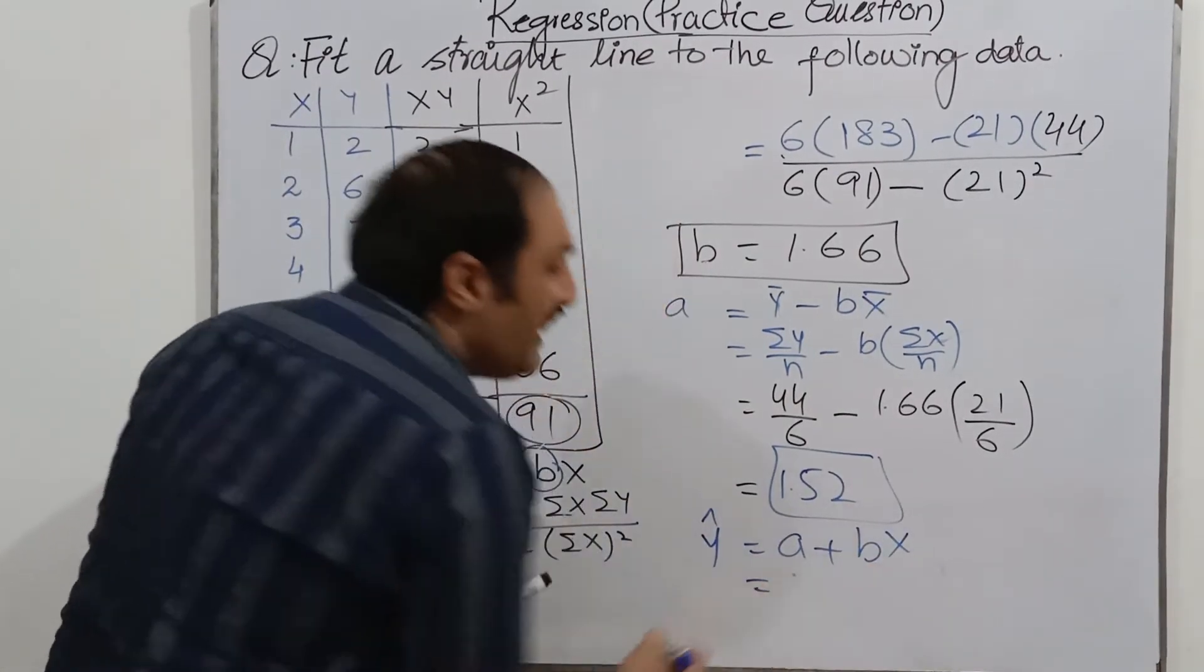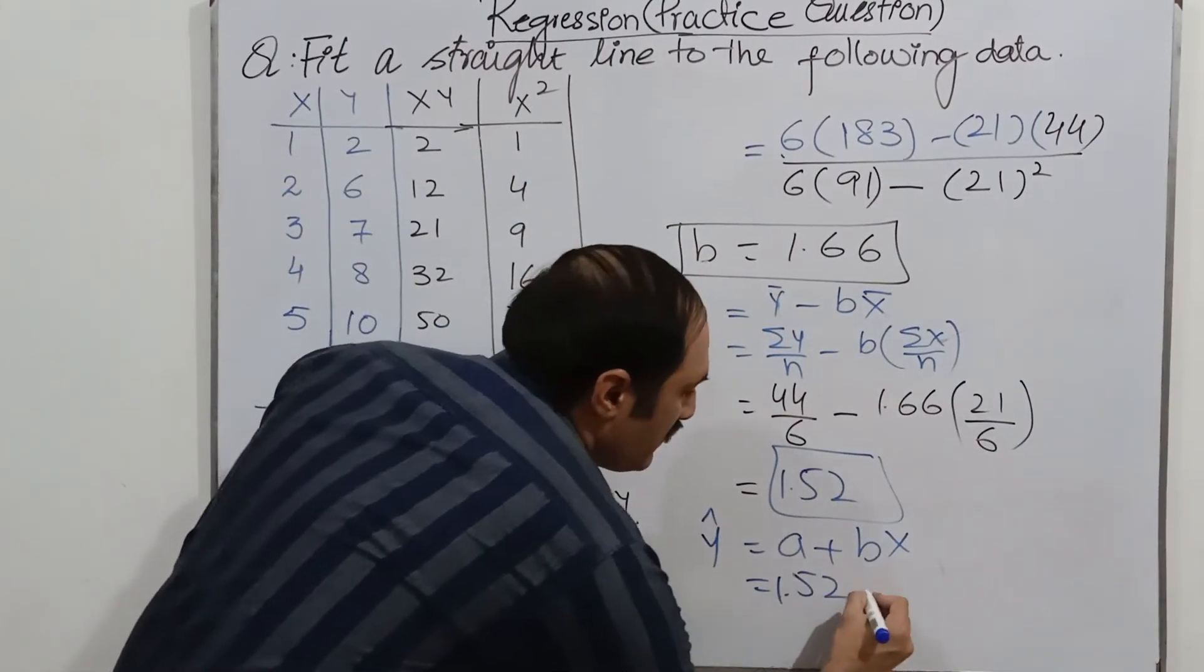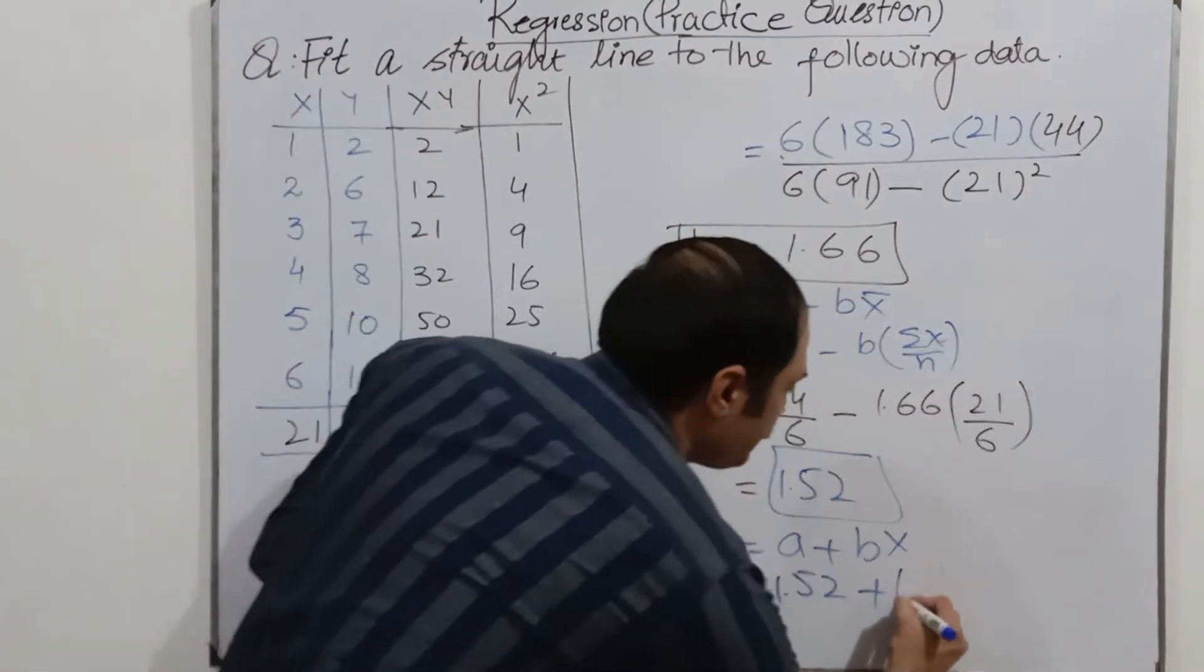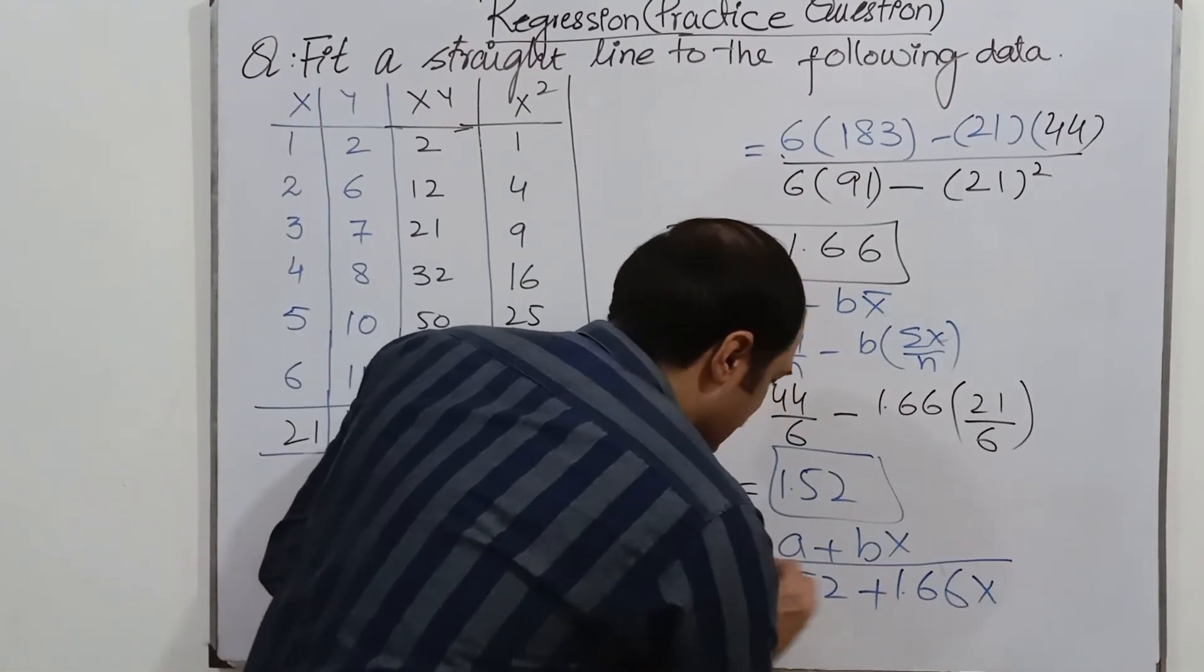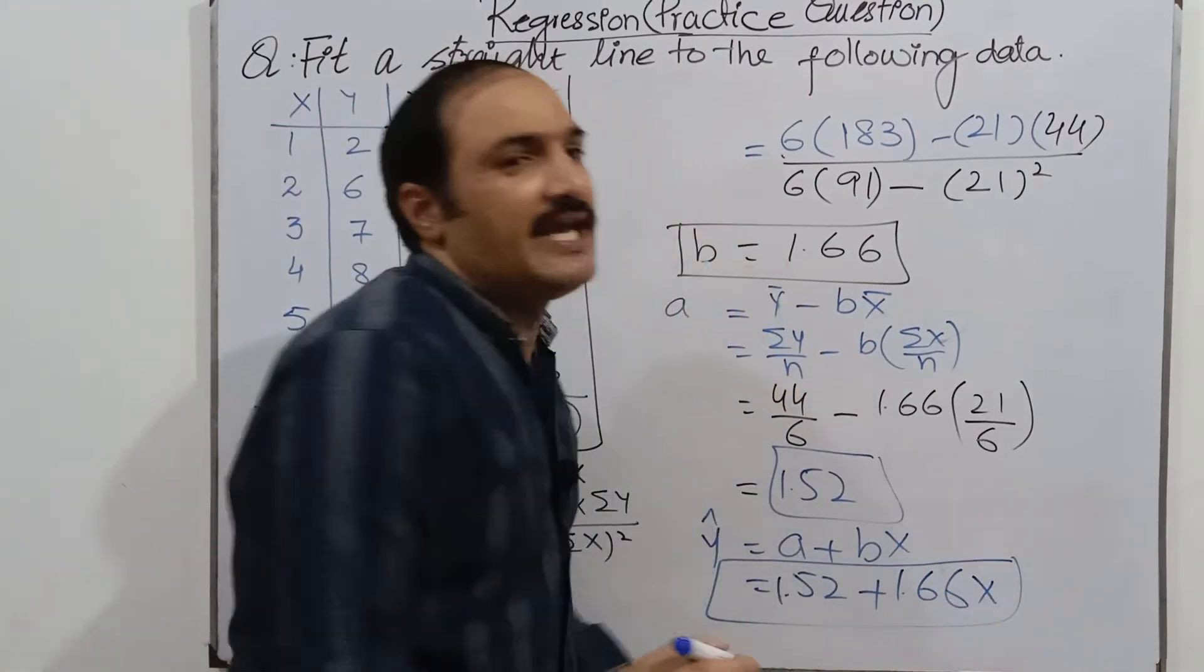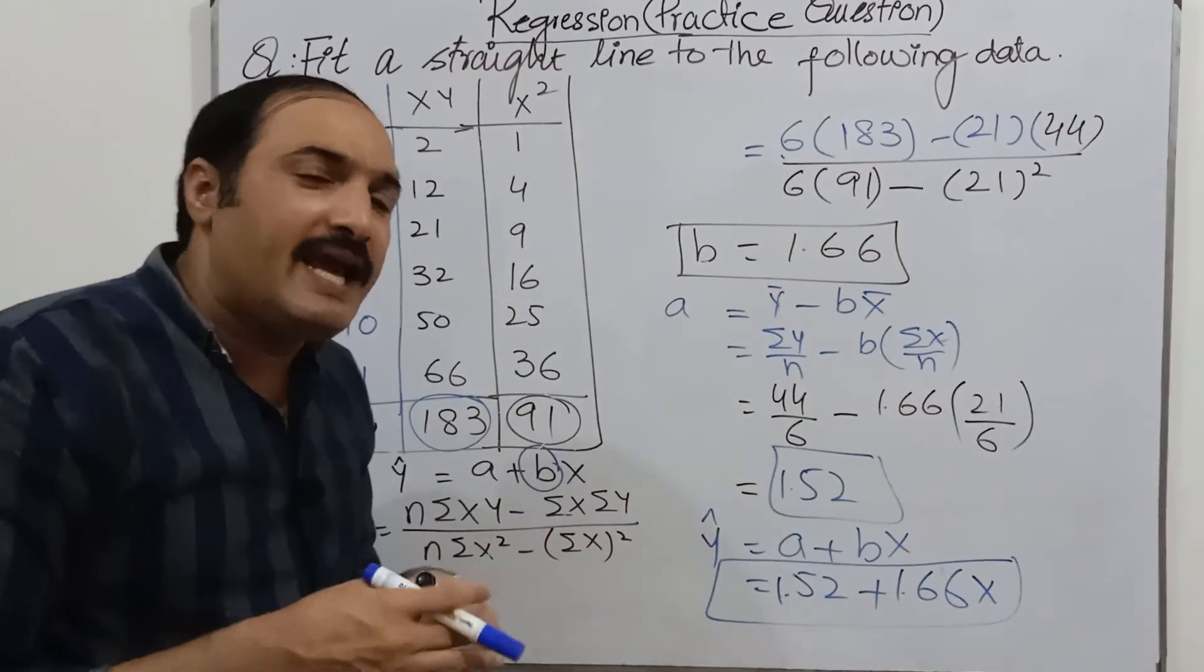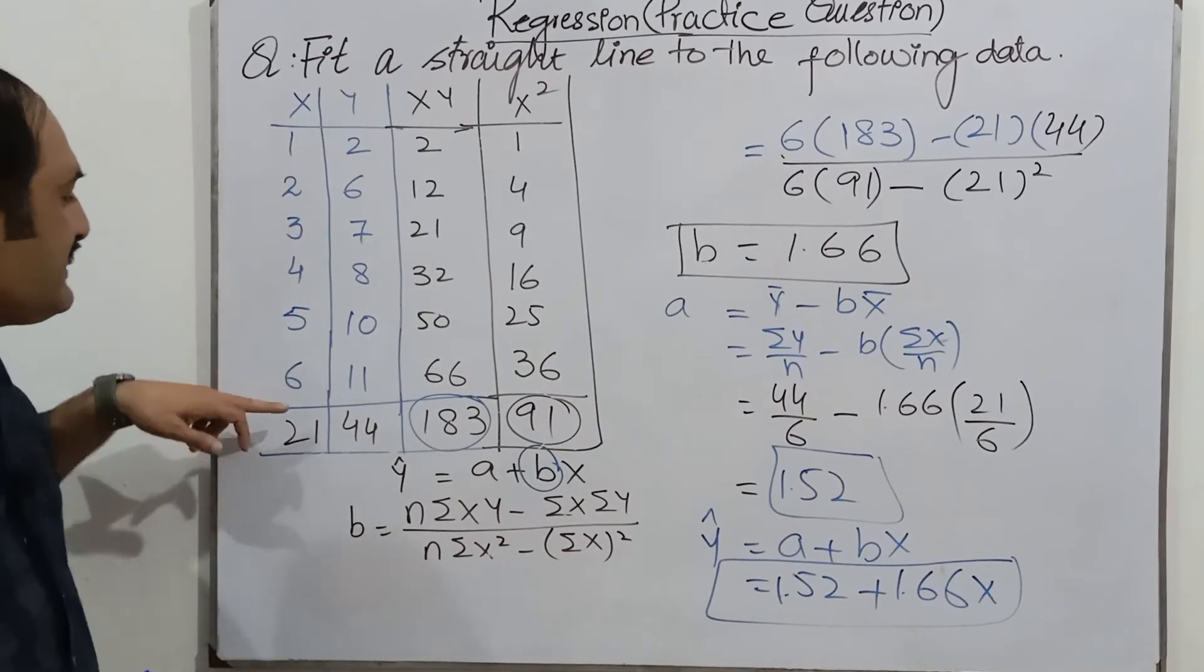Okay dear students, now fit this into the regression line. Y hat is equal to a plus BX. Intercept is 1.52 plus B is 1.66 and where is X? Just you write here X. It's a regression line.